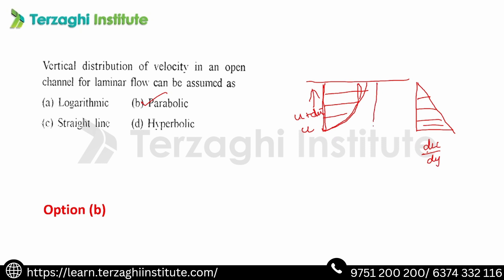In laminar flow, velocity gradient du/dy is proportional to shear stress. So shear stress variation follows a medium value pattern — it decreases from the bottom to the surface. This is the same relationship between velocity gradient and shear stress.